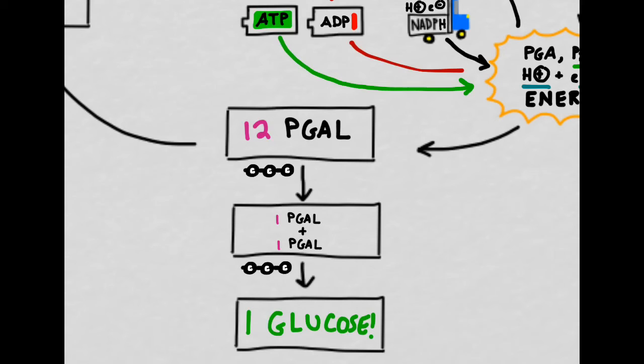However, we now have to ask ourselves, what do we do with the 10 PGAL that are then left over after we steal two of them to create a glucose?